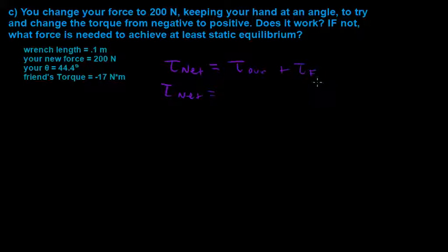And if we remember, our friend had an angle of 90 degrees, so we're not going to even consider writing sine into his equation. So our torque is equal to our force times the length of our wrench times the sine of our angle plus our friend's force times the length of our wrench.